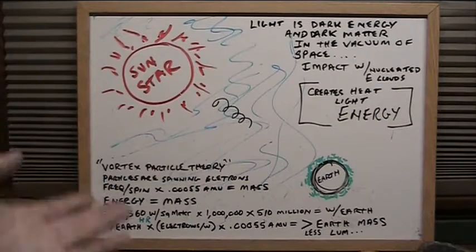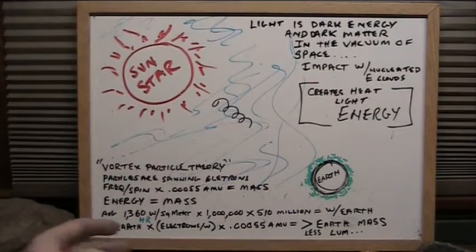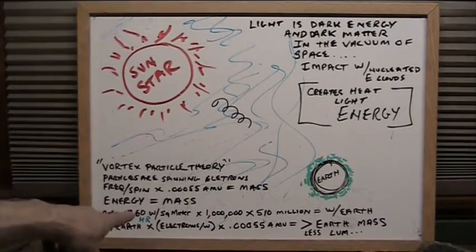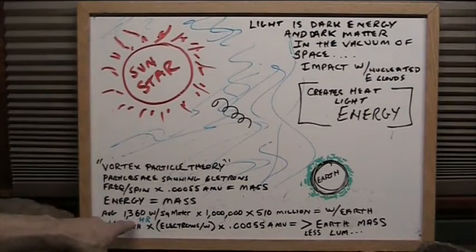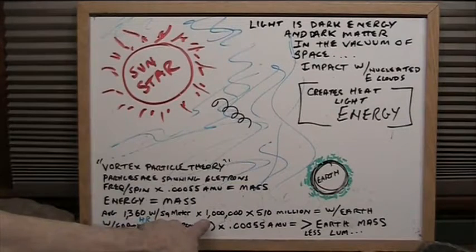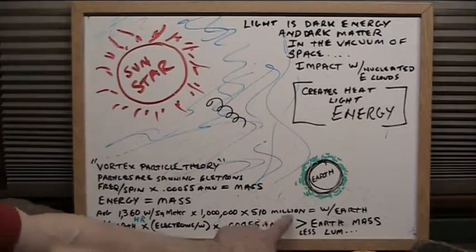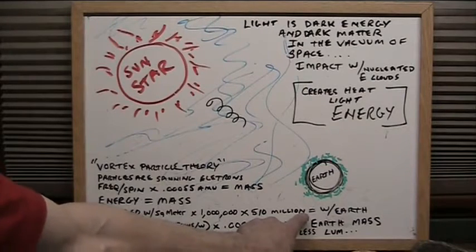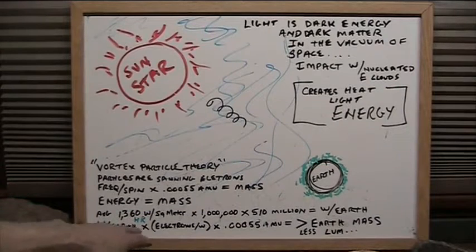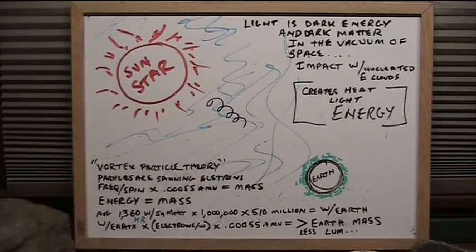Then you go down, how much stuff is hitting the Earth? Because there's a weight to this stuff. I just showed you that. They say that this is how much it weighs. Now, the Earth is growing unbelievably. Look at this. The average per square meter, NASA says, is 1,360 watts per square meter times a million, which is a million square meters in a square kilometer, times 510 million square kilometers, which is the Earth surface. That would be the watts of the Earth. The watts of the Earth times the electrons in a watt is how much the Earth is growing per hour.